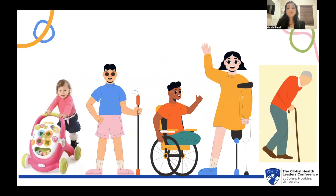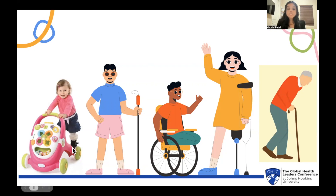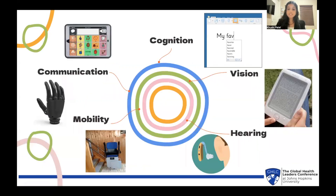At some point in our lives, we've all used a type of assistive technology. As children, we may have used walkers to learn how to walk without falling down. In our old age, we may need to use canes or wheelchairs. So as you can see through this progression, assistive technology can be used for any age, and also for a variety of reasons.